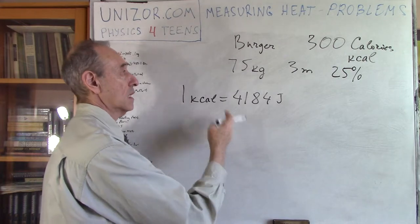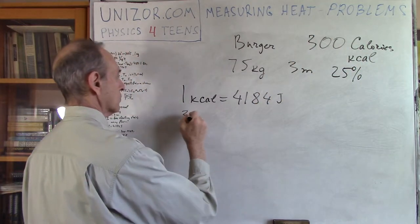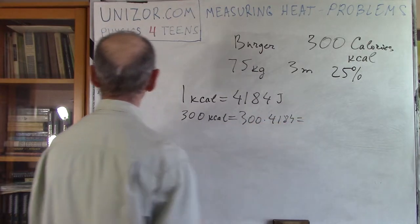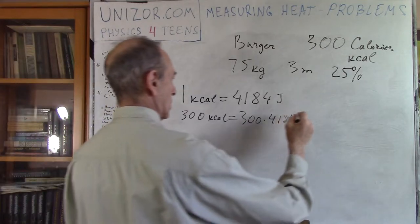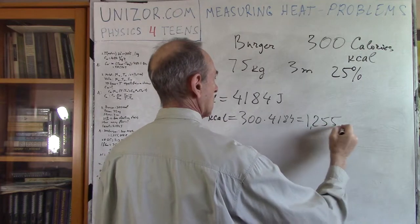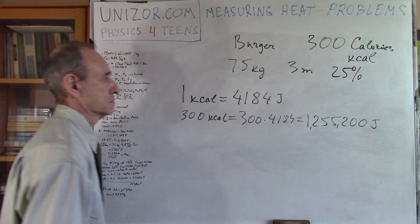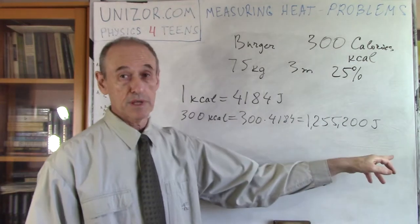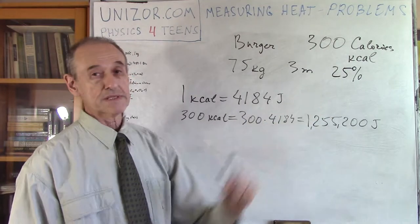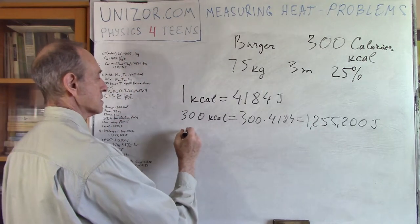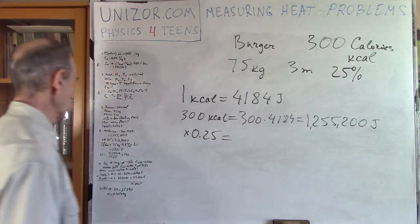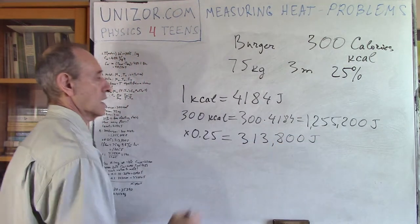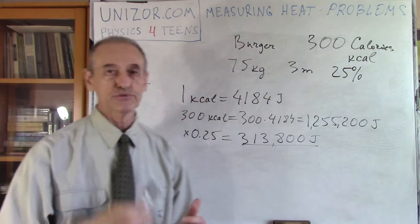So 300 kilocalories is 300 times 4184, which equals 1,255,200 joules. That's the amount of energy in one burger. I can spend only 25% of this to climb the floors, so I multiply by 0.25, which gives me 313,800 joules. This is the amount of energy I have to spend climbing.